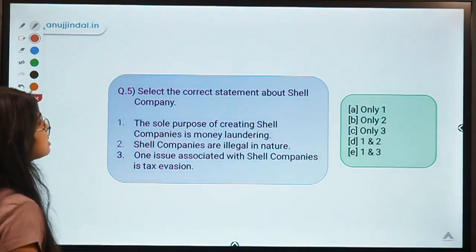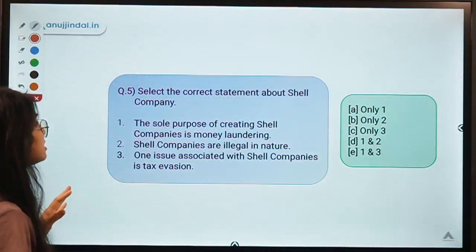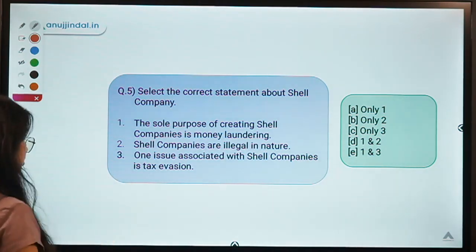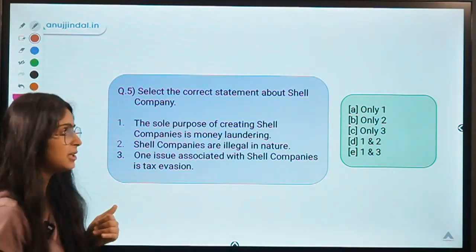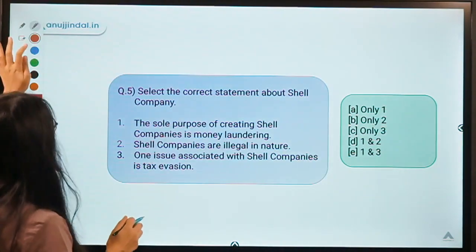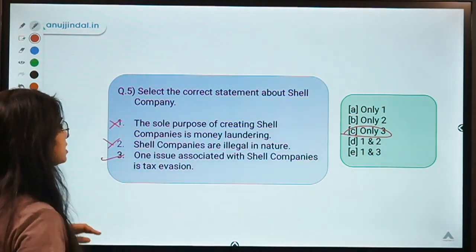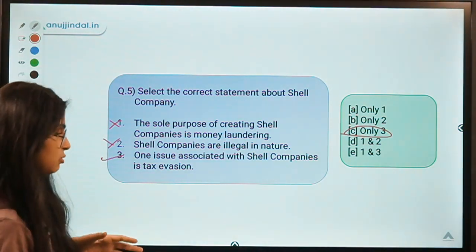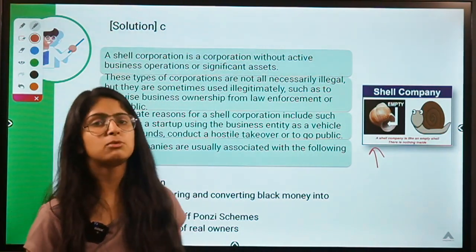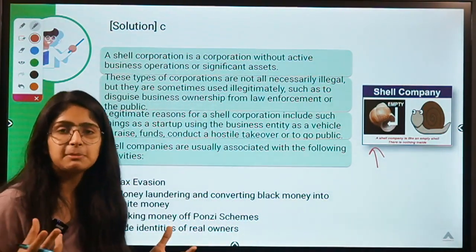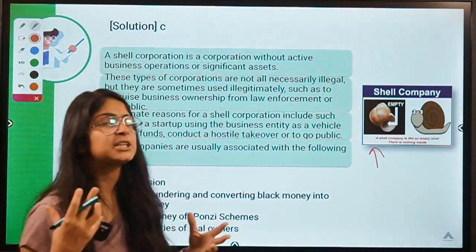Question five: select the correct statement about shell companies. Three statements are given. This question was requested by Komal Krajapa. The correct answer is option C — only statement three is correct; statements one and two are false. A shell company, as the name suggests, is hollow from inside — it is a company without active business operations or significant assets, just a pass-through or route used by companies to fulfill certain aims.